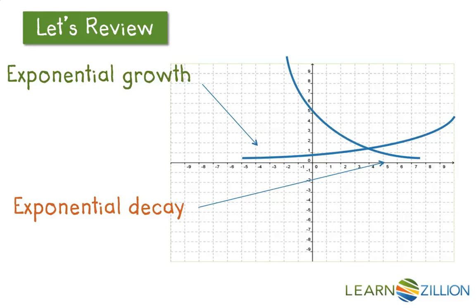Exponential decay is the other type of exponential we might see. In exponential decay, the output values decrease, but by a decreasing amount. The amount by which they decrease gets smaller and smaller as the inputs increase.